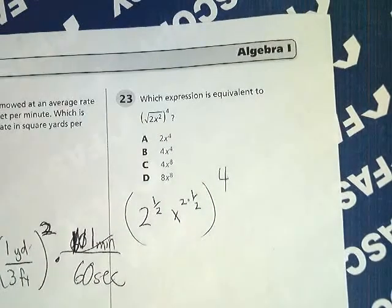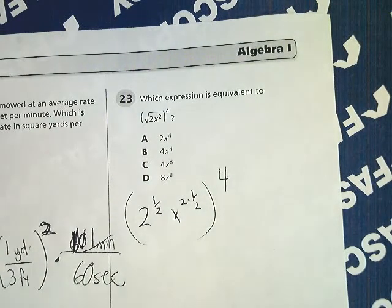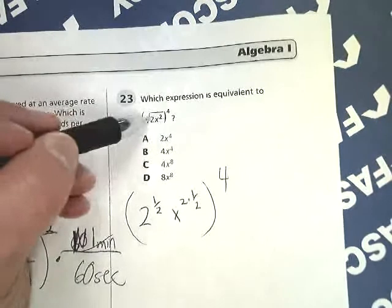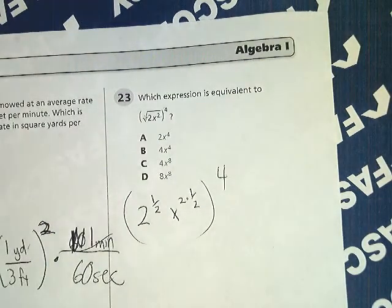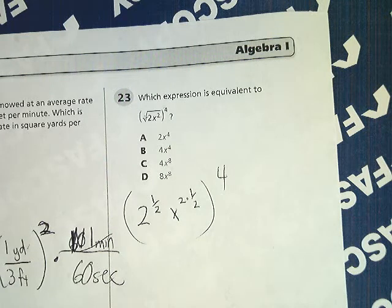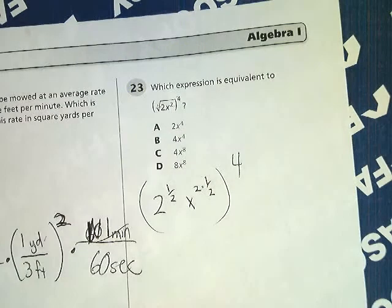Remember, when I'm raising something to a power, the exponents multiply. So I raise all this to the fourth power, but with exponents you multiply. So in this case I just multiply, 4 times one half.